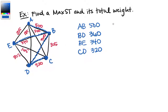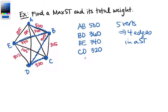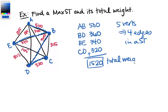With five vertices we have four edges in any spanning tree, and in particular in this maximal spanning tree. Adding up the weights gives us 500 + 360 + 340 + 320 = 1520 as the total weight for this maximal spanning tree. And that is it for today.